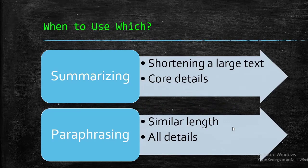So when should we summarize and when should we paraphrase? Is it our choice depending on our liking? Well, no, because these two terms have very significant differences. Summarizing a text means shortening a large portion of text — it can be a whole research paper of about 7,000–8,000 words into a short summary of about 200–250 words, or a summary of a paragraph of 300 words condensed into 2–3 sentences.